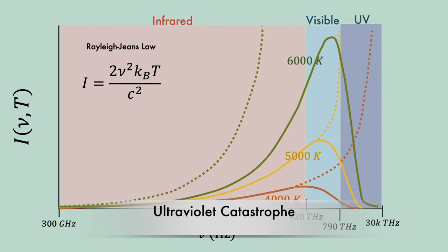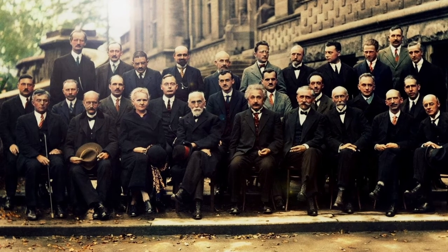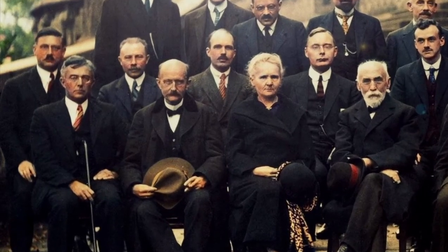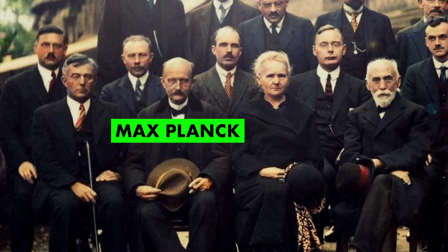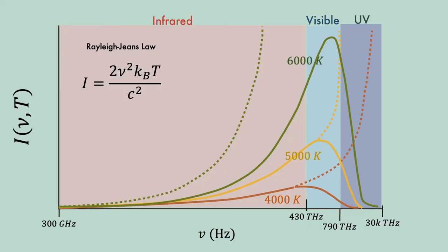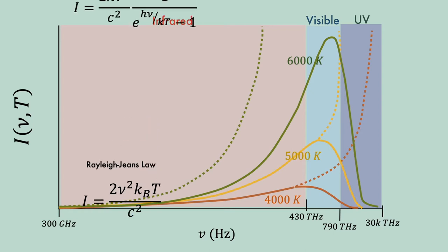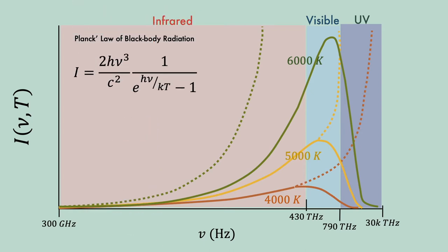If you look at the Rayleigh-Jeans equation, notice that intensity diverges to infinity for high frequencies, as if the radiator releases a disastrous amount of energy. This catastrophic event takes place at the ultraviolet region, which is why this phenomenon is called the ultraviolet catastrophe. To explain this sudden drop of intensity at the ultraviolet region, Max Planck, a German physicist, made an assumption that atomic oscillations inside the cavity walls can oscillate in such a way that they possess discrete amounts of energy. With this assumption, he was able to derive what is known as Planck's Law of Blackbody Radiation, which accurately predicts the results of the experiment, especially the decrease of output intensity in the ultraviolet region.